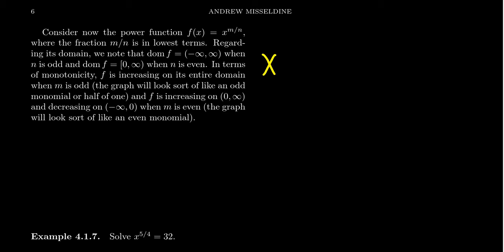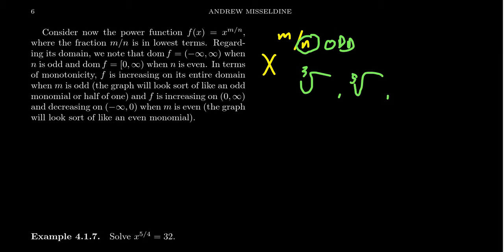First, consider the situation where the denominator in m over n is odd. If your denominator is odd, you're talking about things like the third root, the fifth root, or the seventh root. These functions have no restrictions on their domains whatsoever — we only have to worry about even roots — so the domain in this situation is all real numbers.